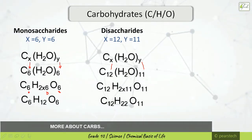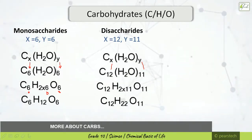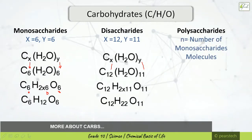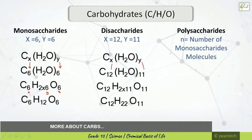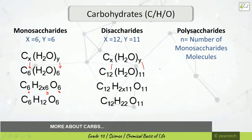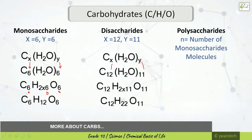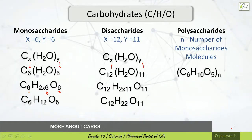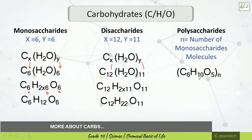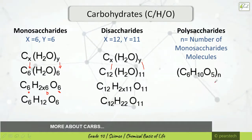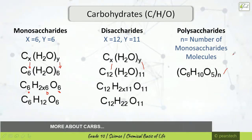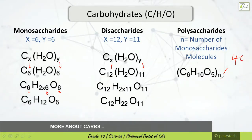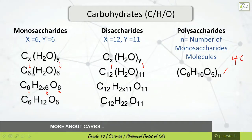There is another type — polysaccharides. Polysaccharides are made up of many monosaccharide molecules. Their formula comes as (C6H10O5)n — for example, if there are 40 monosaccharide units, the formula is multiplied by 40.